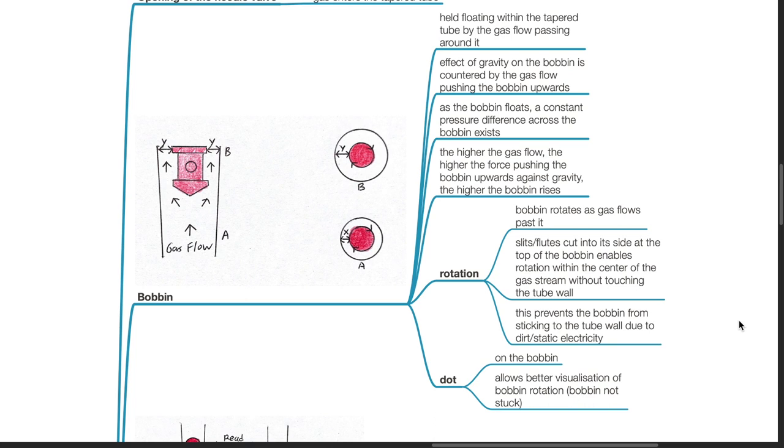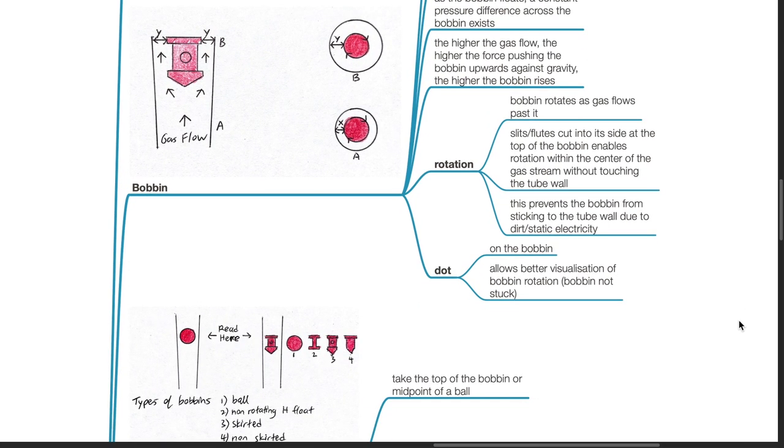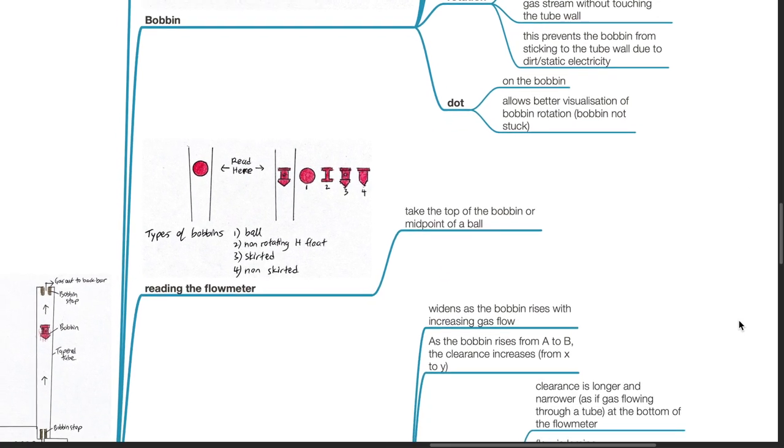Rotation: The bobbin rotates as gas flows past it. Slits or flutes cut into its side at the top of the bobbin enable rotation within the center of the gas stream without touching the tube wall. This prevents the bobbin from sticking to the tube wall due to dirt or static electricity. The dot on the bobbin allows better visualization of bobbin rotation and indicates that the bobbin is not stuck.